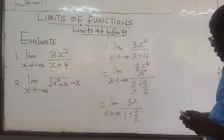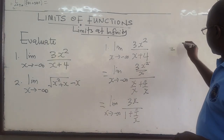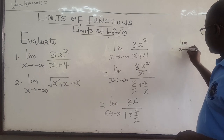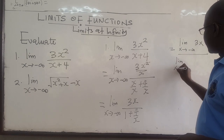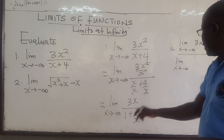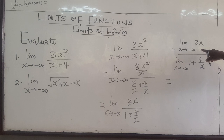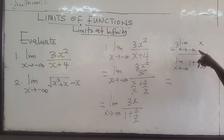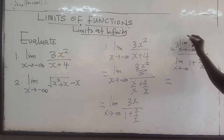Notice that this is the same as the limit as x approaches negative infinity of 3x, divided by the limit as x approaches negative infinity of 1 plus 4 over x. Notice that 3 is a constant which you can bring out. We already found that as x approaches negative infinity, x approaches negative infinity as well. So 3 times negative infinity is negative infinity.